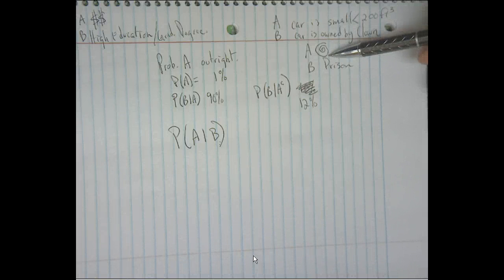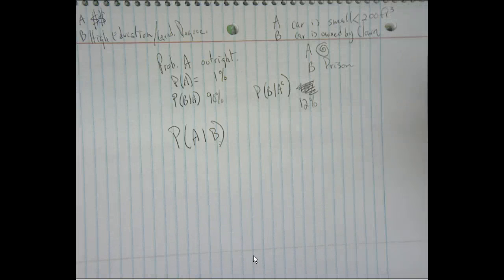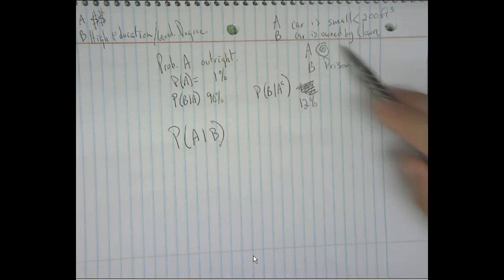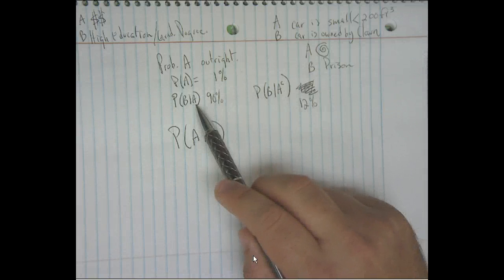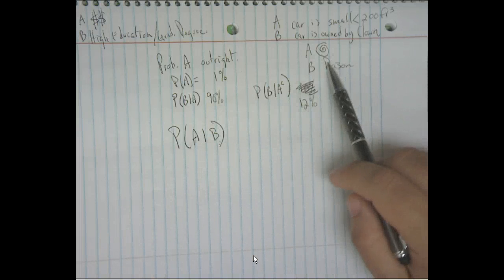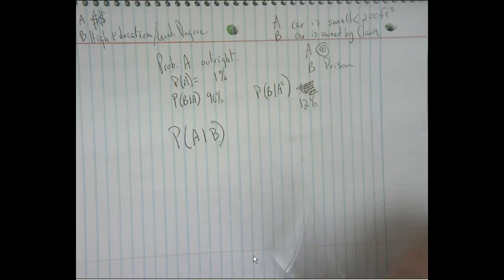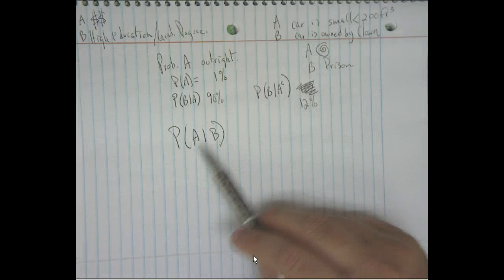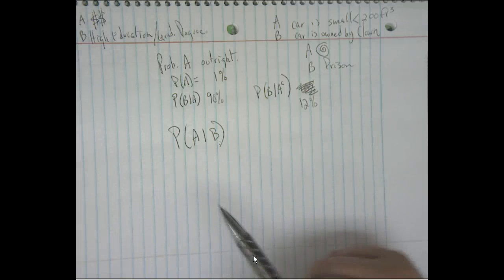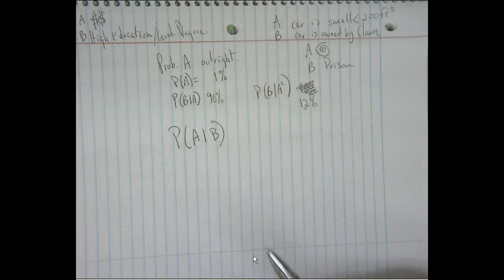For the last example: the probability of having a specific type of tattoo is 1%. Of the people who have that tattoo, the probability that they've been to a specific prison is 90%. Of the people who do not have the tattoo, the probability that they've been to that prison is only 12%. The question would be: what is the probability that if you went to prison, you would get that specific tattoo? That's how you could set up that question.